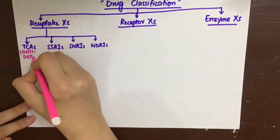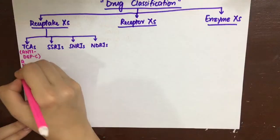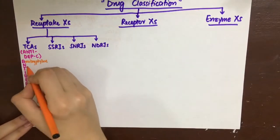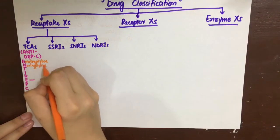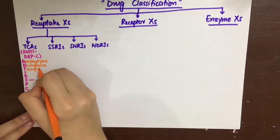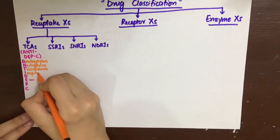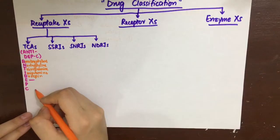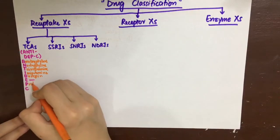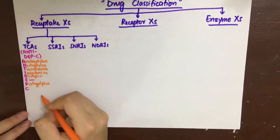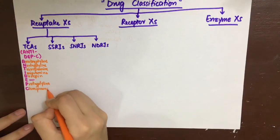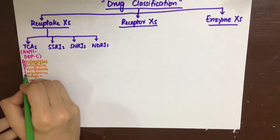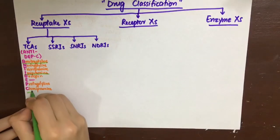The tricyclic antidepressants can be simply remembered by the simple mnemonic ANTI-DEP-C. A for amitriptyline, N for nortriptyline, T for trimipramine, I for imipramine, D for doxepin, E is for nothing, P is for protriptyline, and lastly, clomipramine. Out of all of these, amitriptyline and imipramine have long-acting active metabolites.